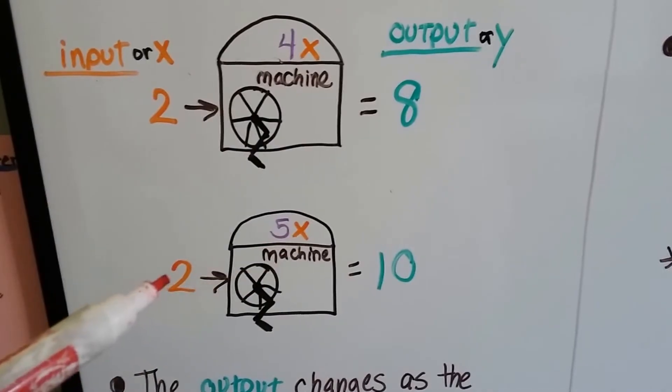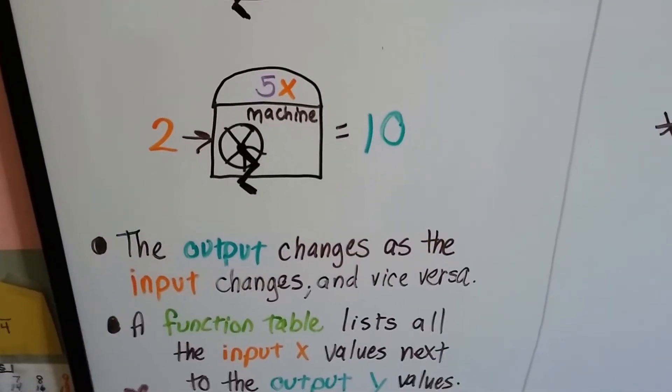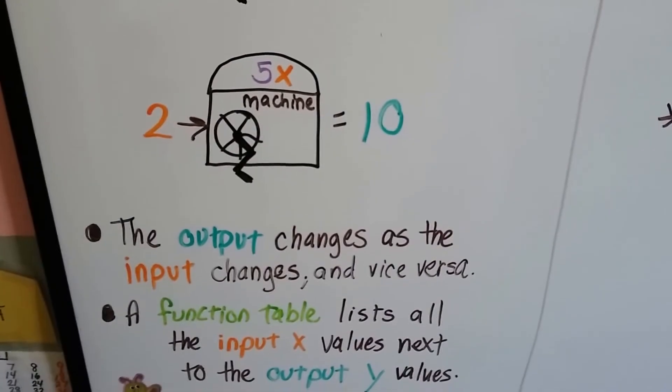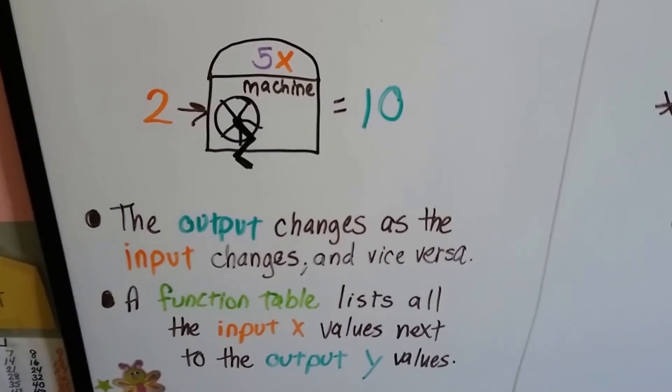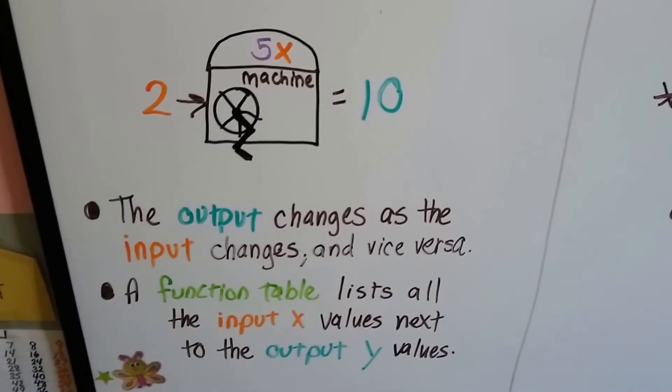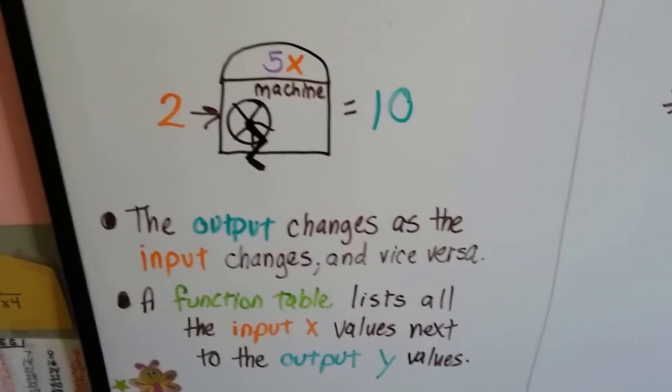And the input is the x. The output changes as the input changes and vice versa. And a function table lists all the input or x values next to the output or y values.